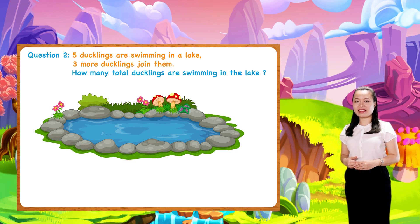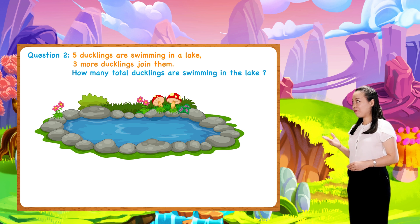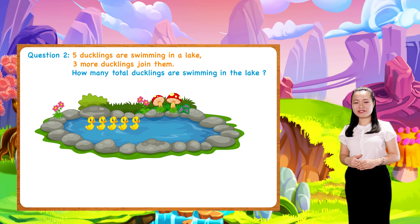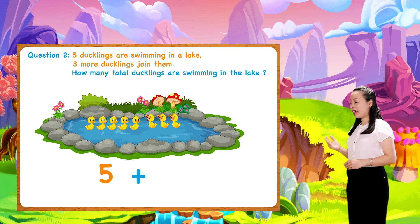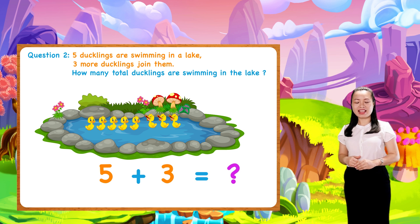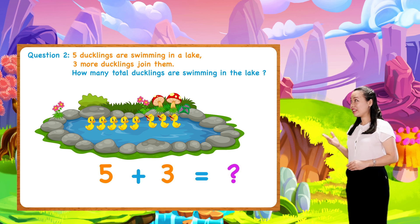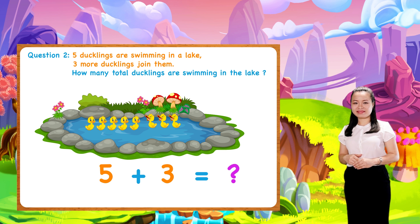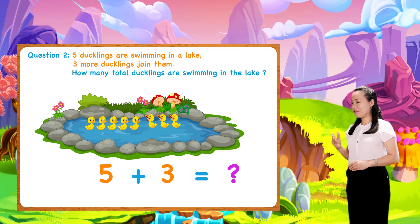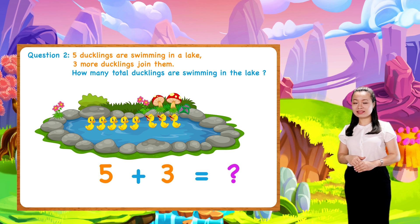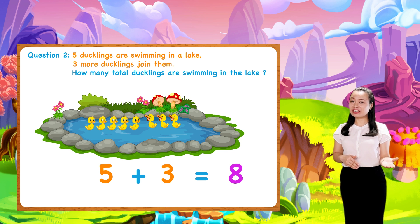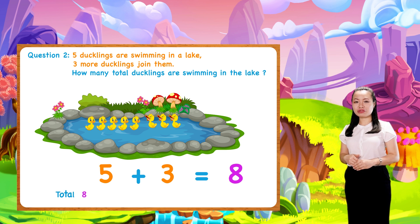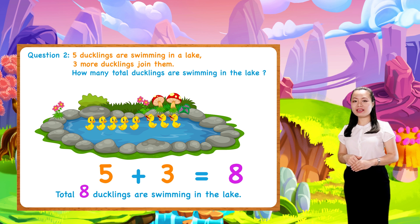Let's find the answer together. Five ducklings are swimming in the lake. We add five and three to find the total number of ducklings swimming in the lake. So, five plus three equals eight. We conclude: eight ducklings in total are swimming in the lake.